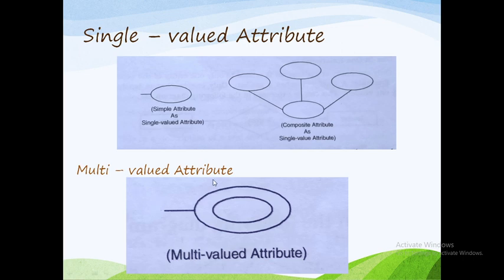The next type is multi-valued attribute. A multi-valued attribute can have multiple values. The attribute that has multiple values is called a multi-valued attribute. For example, one particular person can have more than one phone number — that is why phone number is a multi-valued attribute. Qualification is also an example of a multi-valued attribute, as a person may have multiple degrees.